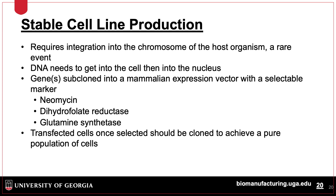Stable cell lines have genes integrated into chromosomal DNA. Genes are inserted along with a selectable marker, so only cells with the gene grow, while other cells that don't have the plasmid cannot grow. A variety of clones result and must be screened for the best producer. Cells can be selected using markers including neomycin, dihydrofolate reductase, or glutamine synthetase. The cells must be isolated as a single population before moving forward to cell line characterization.